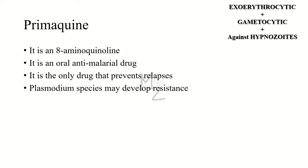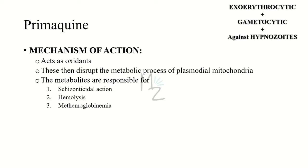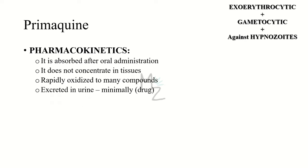The first drug in the list is primaquine, an 8-aminoquinolone administered orally. It is the only drug that prevents relapses — meaning the recurrence of disease after recovery. Plasmodium species may develop resistance against it. Mechanism of action: primaquine acts as an oxidant that severely disrupts the metabolic processes of plasmodial mitochondria. Its metabolites are responsible for schizonticidal action as well as for hemolysis and methemoglobinemia encountered as toxicities.